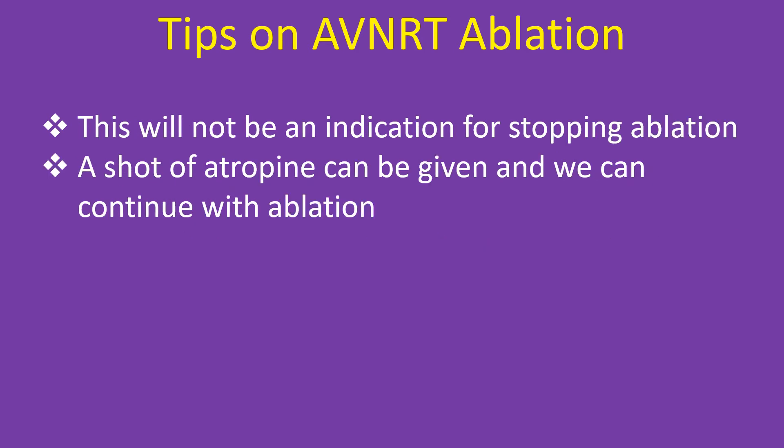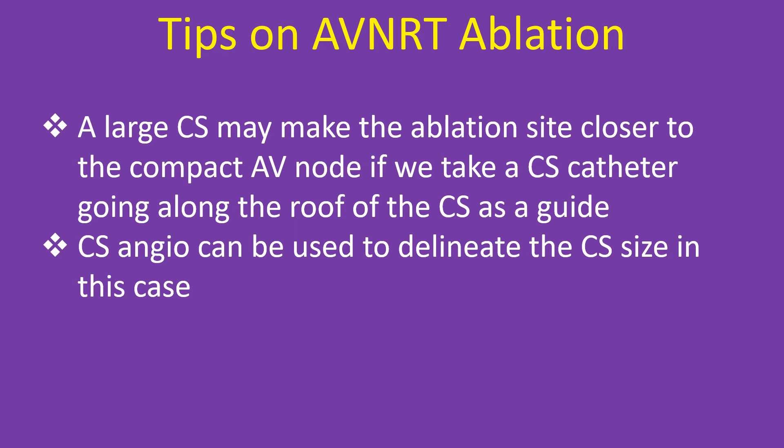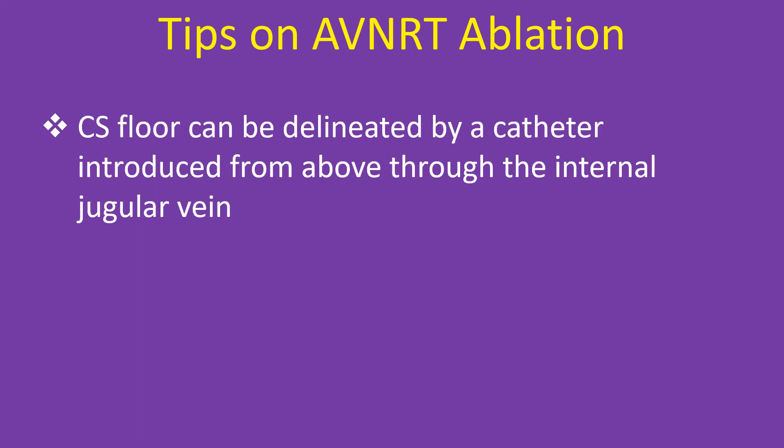Vagal-induced AV block during CS floor ablation is not an indication for stopping. A shot of atropine can be given and ablation can continue. A large coronary sinus may bring the ablation site closer to the compact AV node if a CS catheter running along the roof of the CS is used as a guide. CS angiography can delineate CS size, and the CS floor can be mapped with a catheter introduced from above via the internal jugular vein.